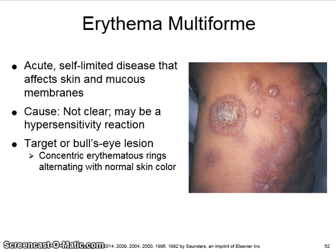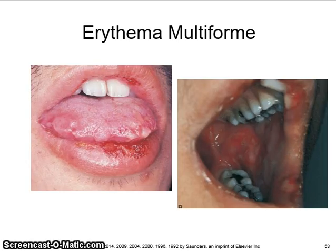The typical appearance is seen on the image on the right. There are target or bullseye lesions, which are concentric erythematous rings alternating with normal skin color. Here are more examples of the lesions of erythema multiforme.